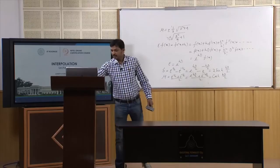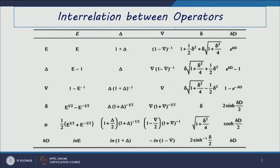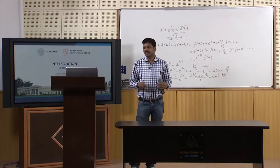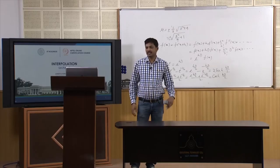The interrelation between difference operators expresses E in terms of delta (forward), nabla (backward), central difference δ, and the differential operator D. All operators — E, delta, nabla, small delta, mu, and D — can be expressed in different equivalent forms, which we will summarize in a table.